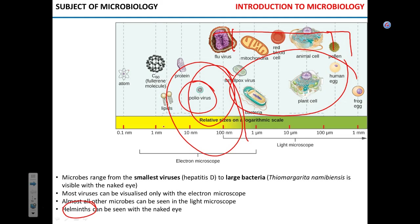However, helminths are not microscopic — they're pretty large. Some of them can reach a length of about 12–15 feet, and certain species can be even longer than that. So hopefully we're going to talk about them as well.